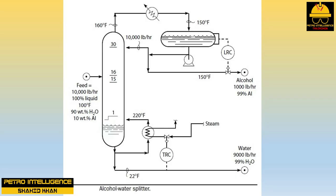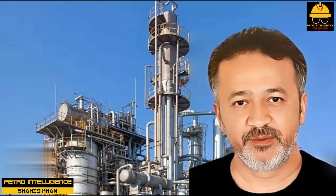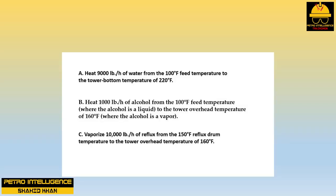Returning to the picture, we wish first to determine the reboiler duty. To do this we have to supply three heat requirements. Step A: heat 9,000 lb/hr of water from the 100°F feed temperature to the tower bottom temperature of 220°F.